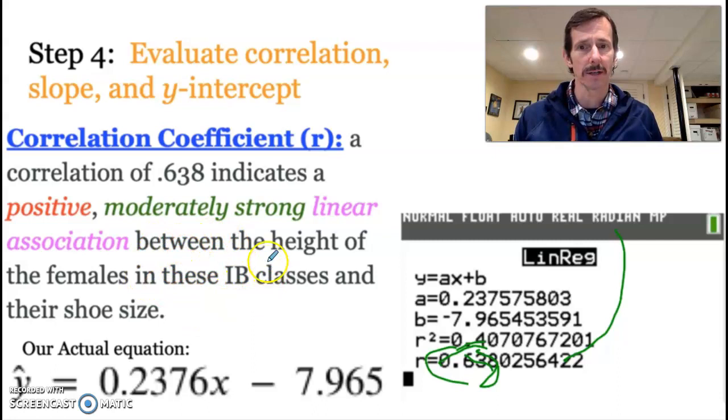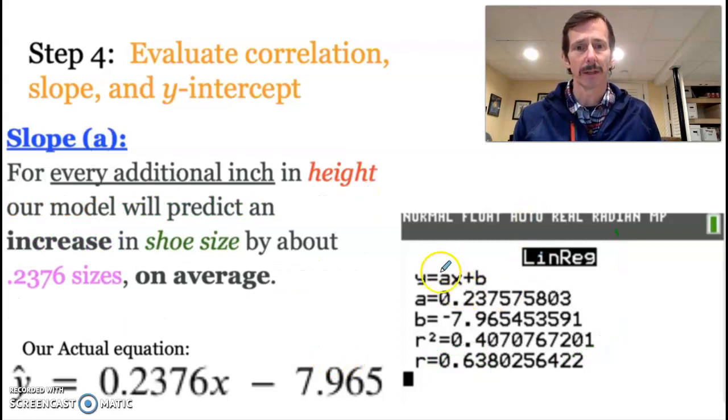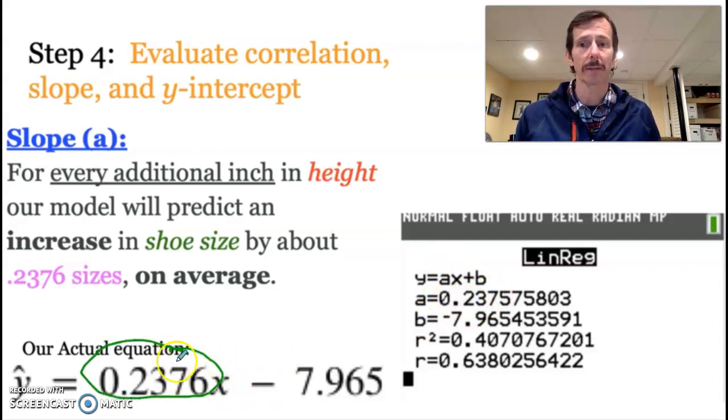So this is putting it into context of the situation, which is the relationship between the height and the shoe size. Again, this is just our fantastic equation down here, because the next thing we're going to talk about is the slope. And again, this A value is the slope, which was 0.2376, or in our equation, it's that guy right there.